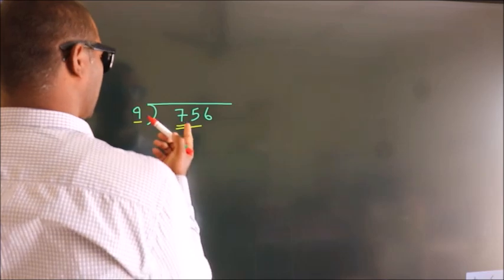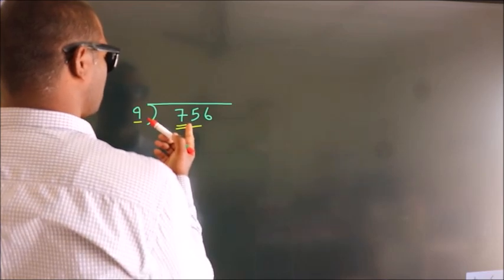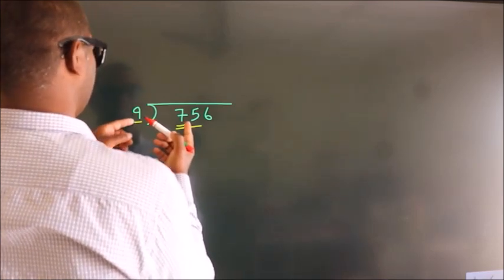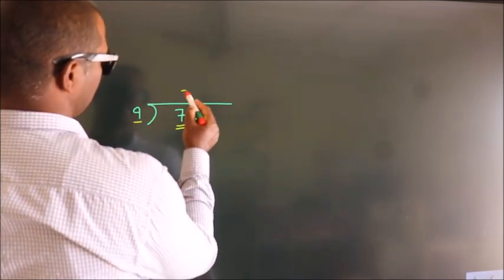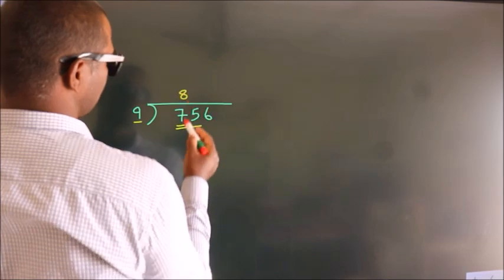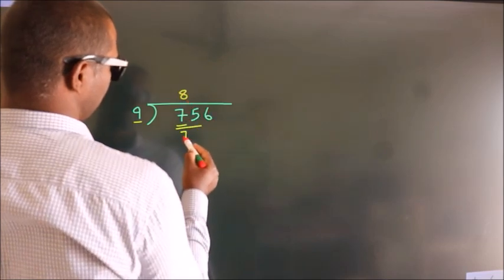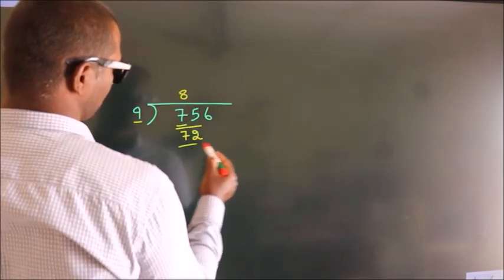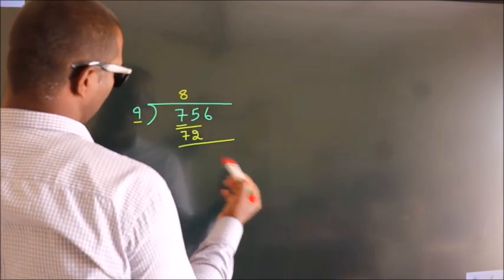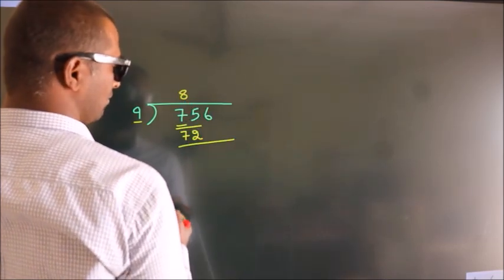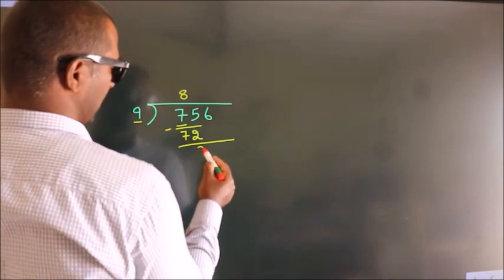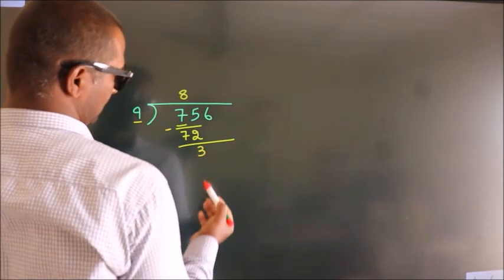A number close to 75 in the 9 times table is 9 times 8, which is 72. Now we subtract, and we get 3.